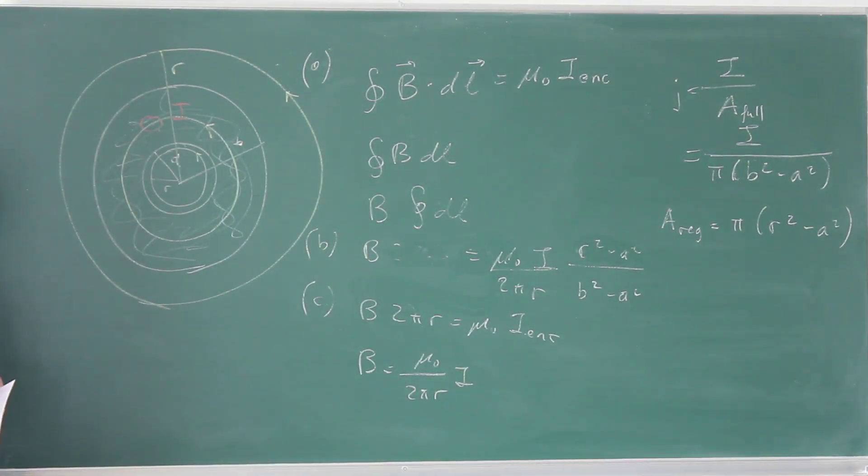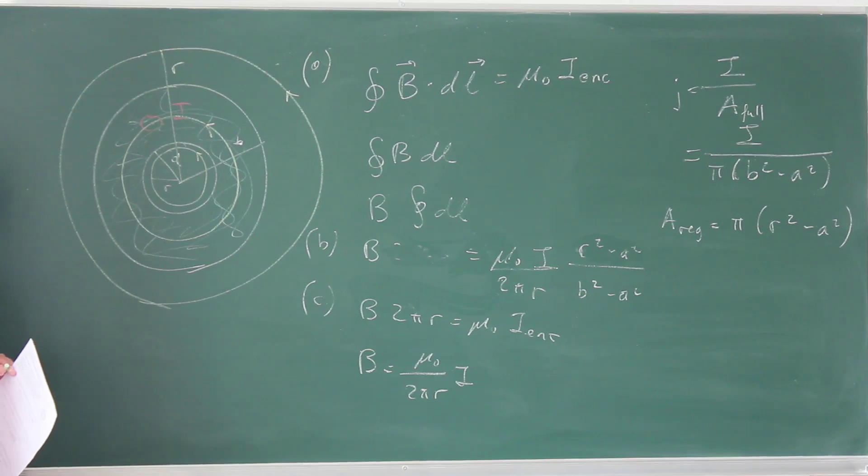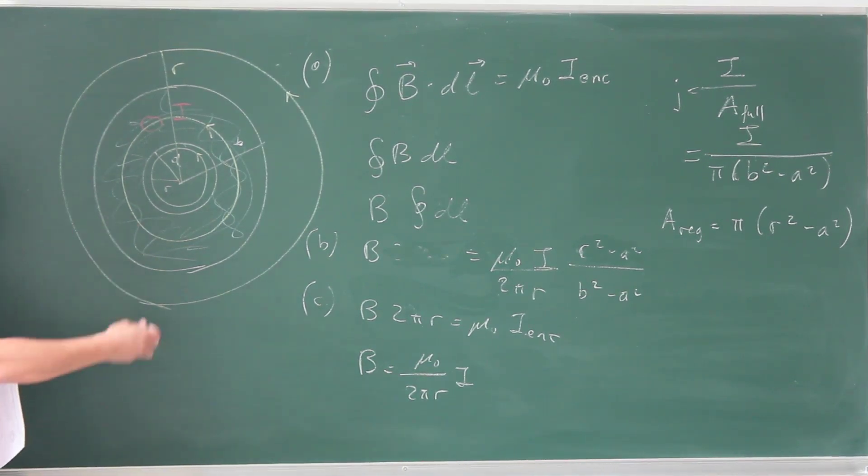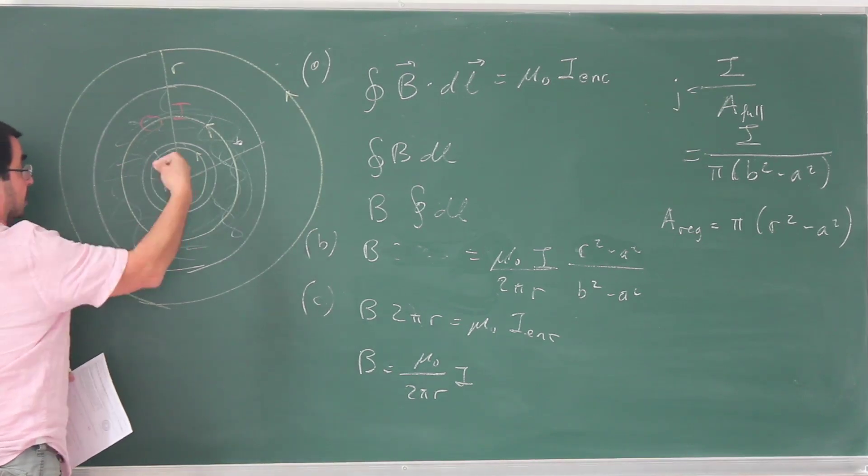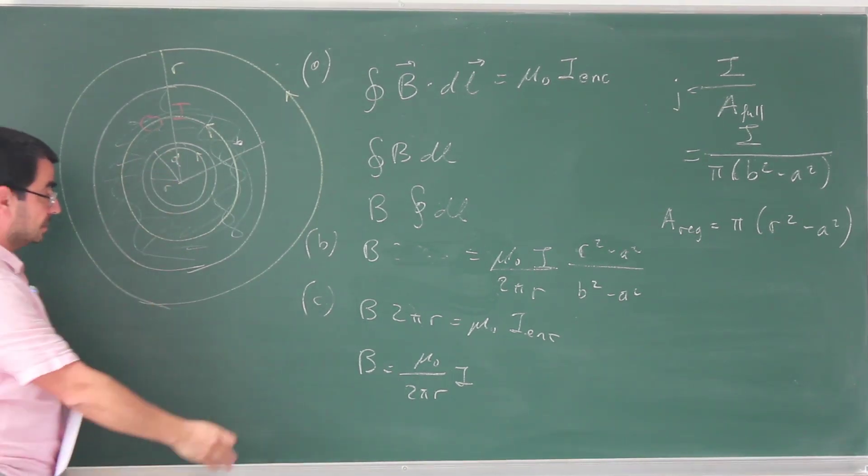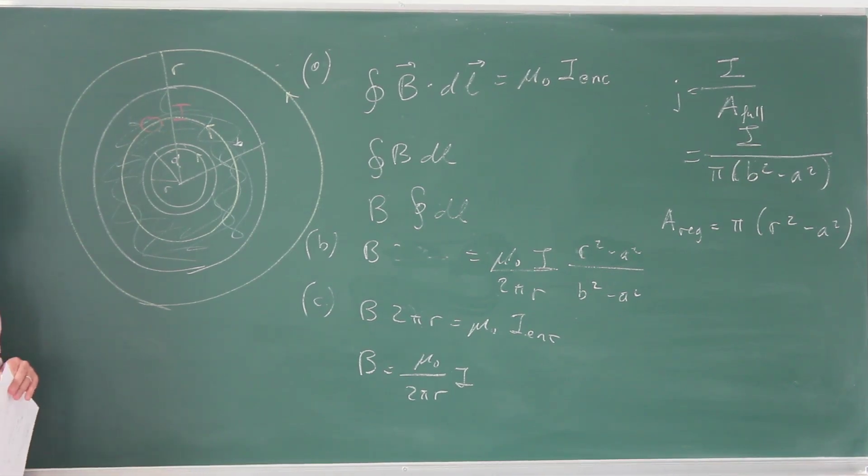And this is a result that you could write down without actually using Ampere's loop, even though you have to, because the problem explicitly says using Ampere's loop. Because this is cylindrically symmetric, as long as it's cylindrically symmetric, you can imagine that all these currents actually concentrated in a single line. And this is, of course, the magnetic field of a single infinite current carrying wire.